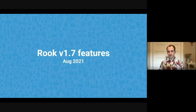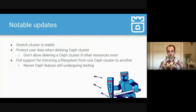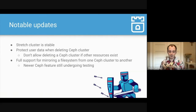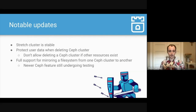Finally, the features in the recent Rook 1.7 release from August 2021. Three notable updates: stretch cluster is now stable; we now protect user data when deleting a Ceph cluster — we don't allow a Ceph cluster to actually be deleted if any other Rook resources exist, preventing an administrator from accidentally deleting user data; and we've continued to add support for mirroring file systems from one Ceph cluster to another, with full support now as far as the Ceph project is concerned, though it is still considered under testing.